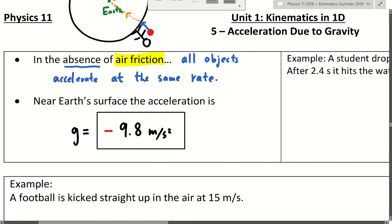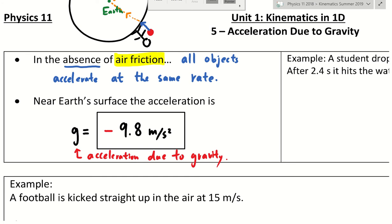So 9.8 meters per second squared, negative, because gravity is pointing down. We call this value little g, and it has a name: acceleration due to gravity. As long as you are near the surface of the earth, that's the number to use. One of the things you have to understand is that gravity does indeed get weaker as you go further away from the center of the object that's attracting you.